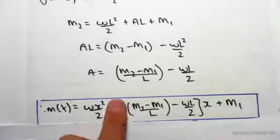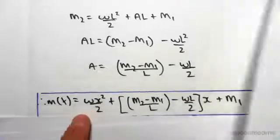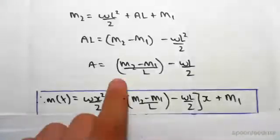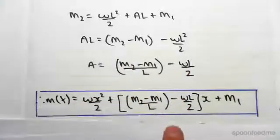Substituting into our formula for our constants A and B, we have wx squared over 2 plus Ax. A we found over here, so that's M2 minus M1 over L minus wL over 2, times x, plus M1.